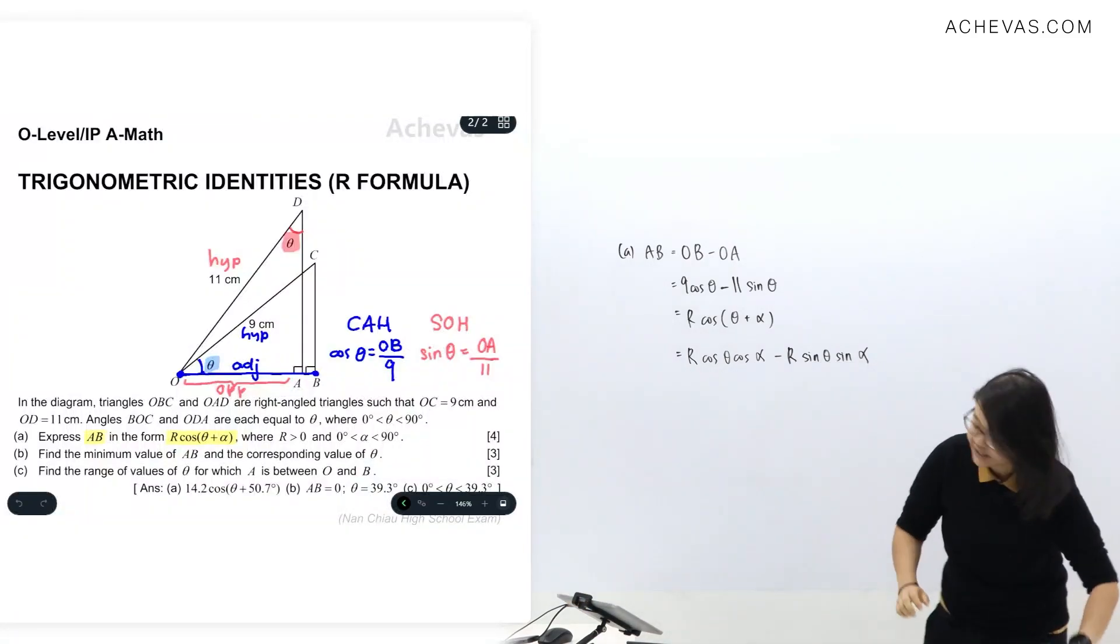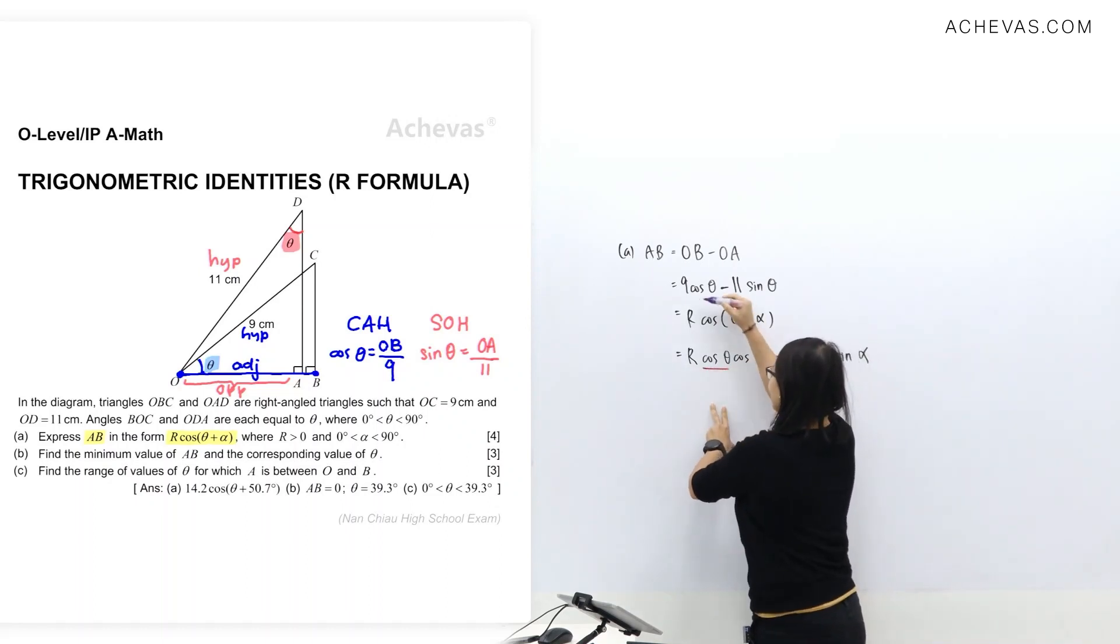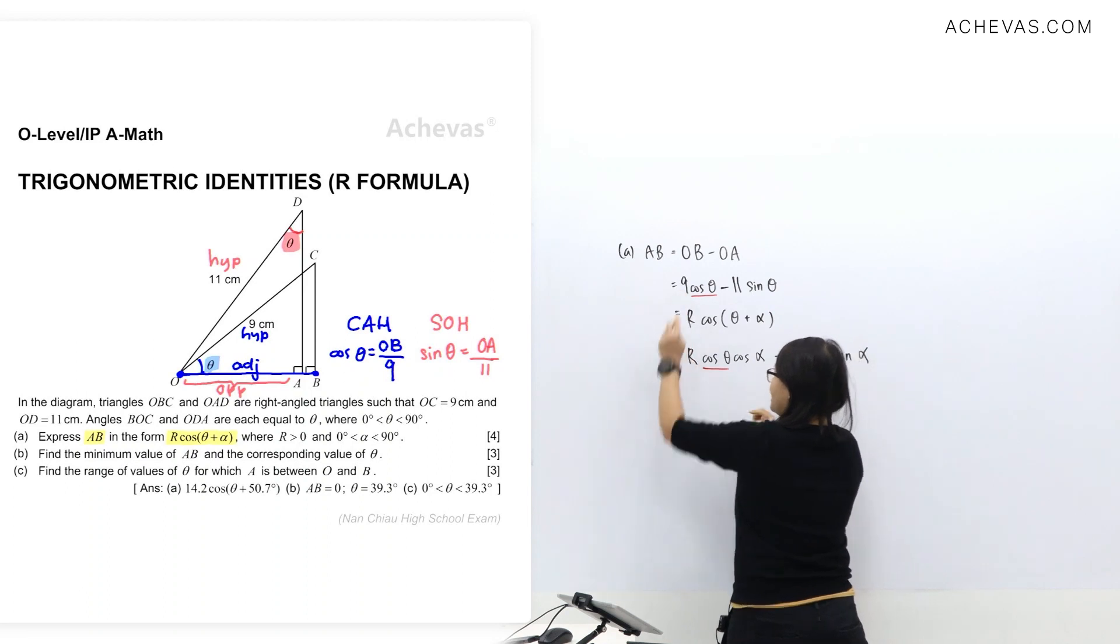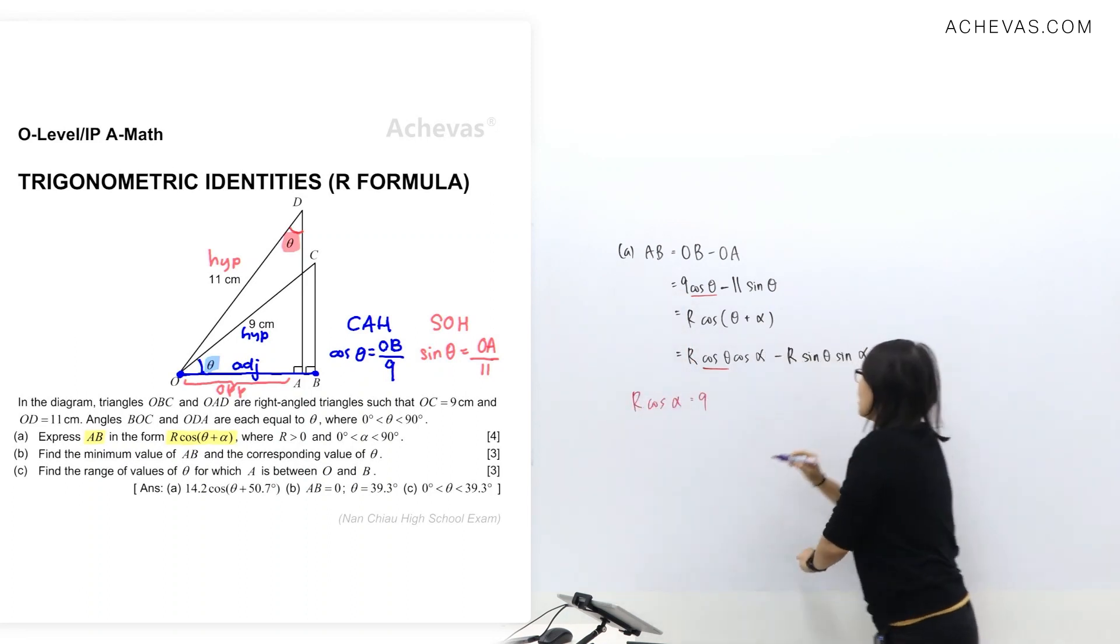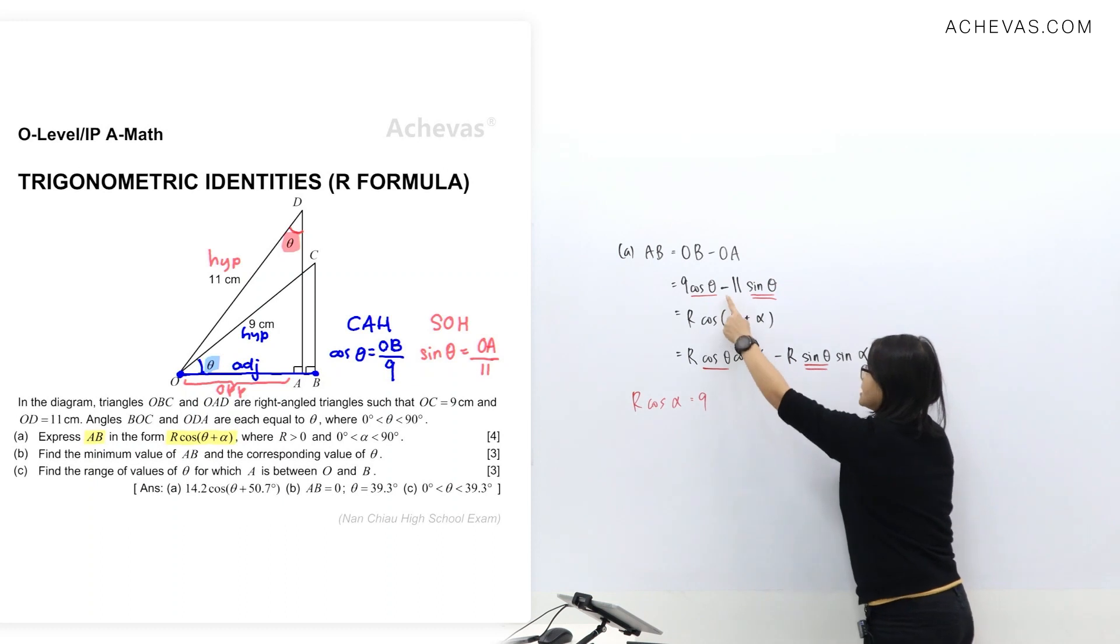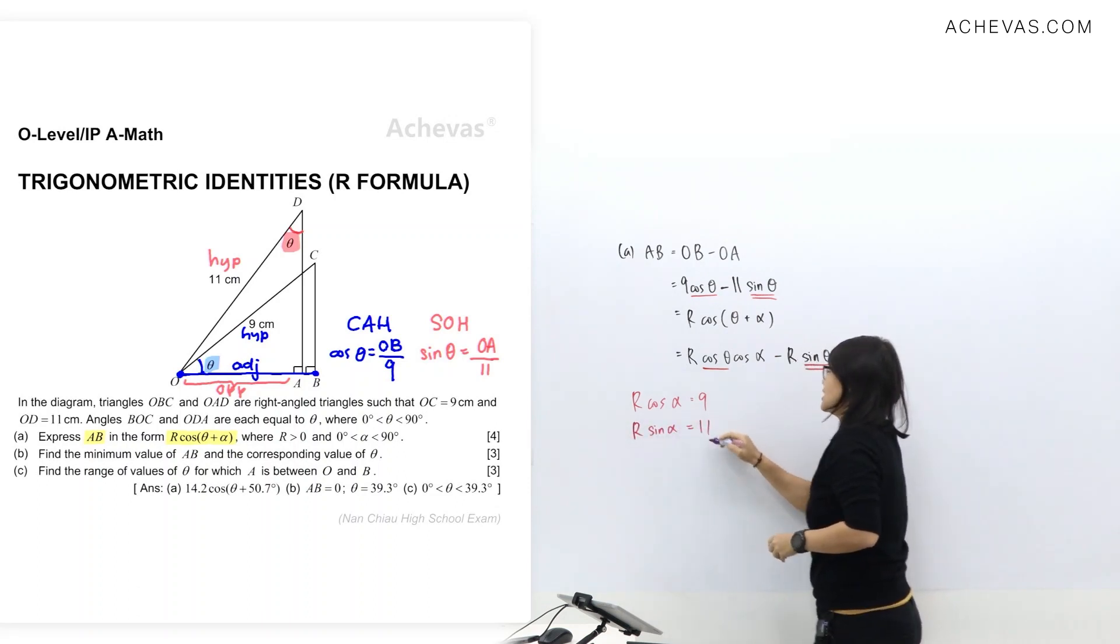Alright, I'm done with using the formula page. Let's go back to the question. We'll continue by observing the one with cos theta. I can see that R cos alpha is equal to 9. Let me write down R cos alpha equals 9. Observing the term that contains sin theta, I can see this negative. I'm not going to focus on negative. I'm going to focus on R sin alpha. Now it's 11. So I'm going to write down R sin alpha equals 11.